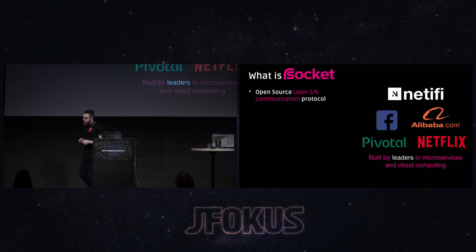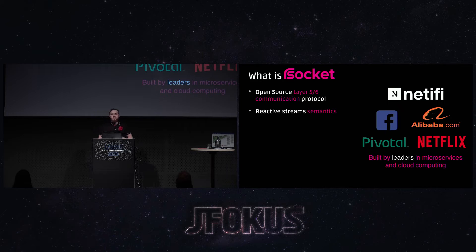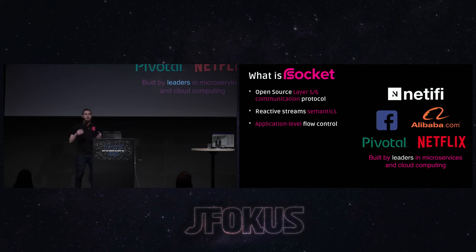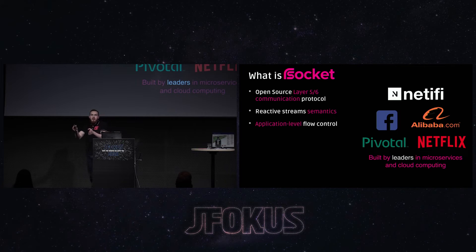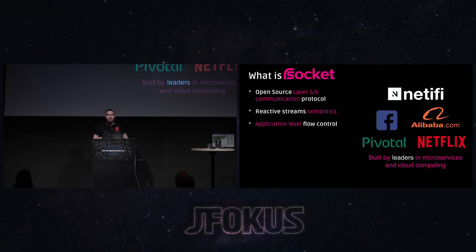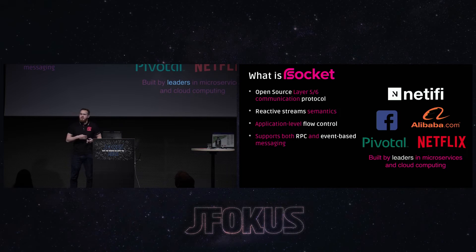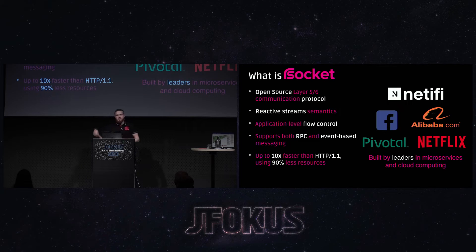RSocket is a protocol built by really large companies that know how to build stable, resilient, and reactive microservices. RSocket is essentially a Layer 4 or 6 network protocol. It follows reactive stream semantics and provides application-level flow control — you don't have to do buffering or windowing that TCP provides; you can specify how many messages you want to consume. It also provides different ways of messaging: RPC and event-driven. And it's 10 times faster than HTTP.